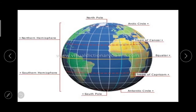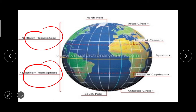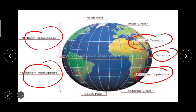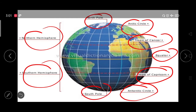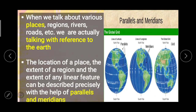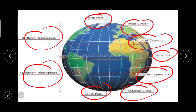Which oceans are spread in all the four hemispheres? To understand this, we need to consider the hemispheres: Southern Hemisphere, Northern Hemisphere, Tropic of Cancer, Equator, Tropic of Capricorn, Antarctic Circle, Arctic Circle, South Pole, and North Pole. The answer is Atlantic and Pacific Ocean are spread in all four hemispheres.